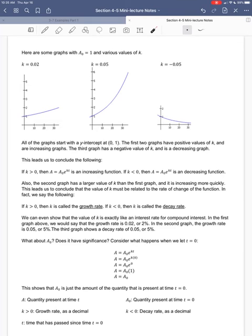We saw all these started at the point (0, 1). What about this value a sub 0, which is in front of that exponential model? Does it have significance? Well, we can see that here. What happens when we let t equal 0?